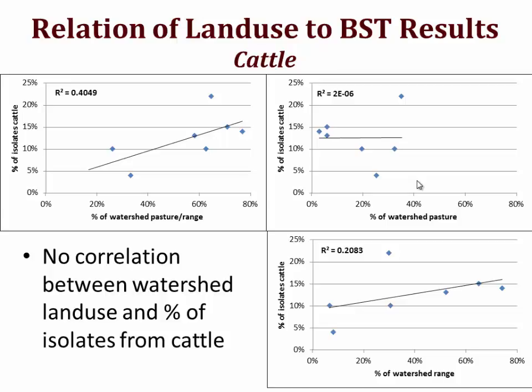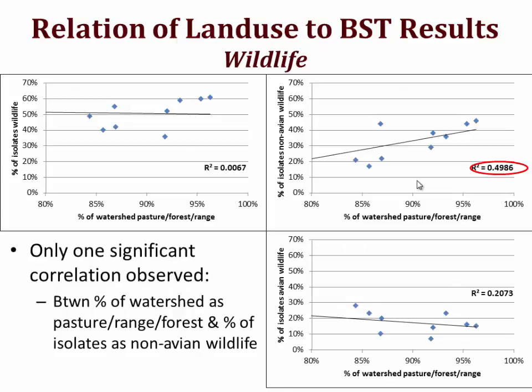It's a pretty low number of samples, and we really didn't see a correlation between watershed land use and the percent of isolates from cattle. I looked at a wide variety of different land use classes, and for wildlife we again really didn't see a relationship between land use and our BST results. About the best we saw was between non-avian wildlife and the percent of the watershed that is pasture, forest, and range together. Based on the limited data we have so far, I don't really see any significant correlations between land use and contributions from these different animal classes.